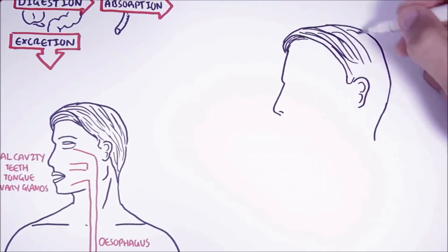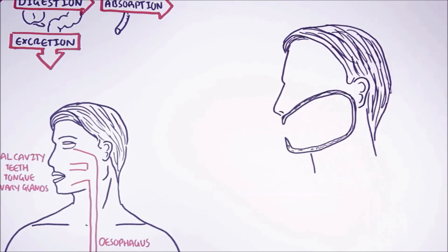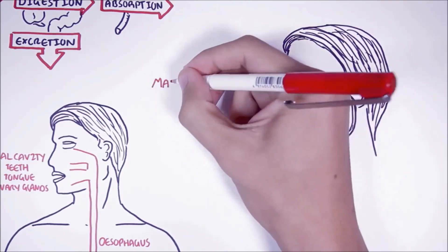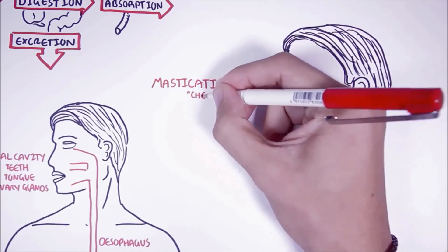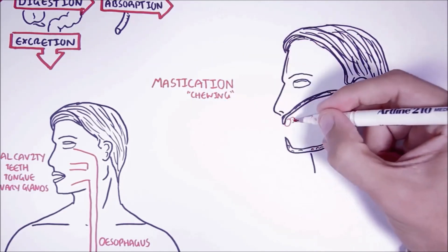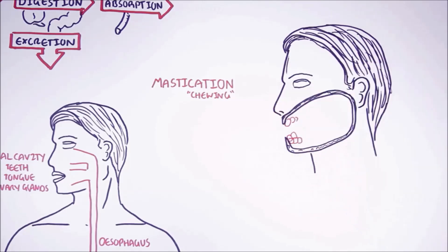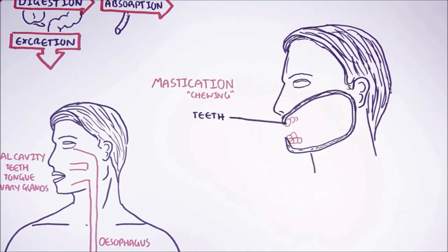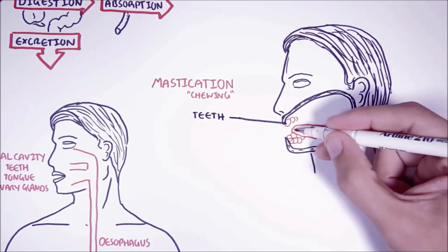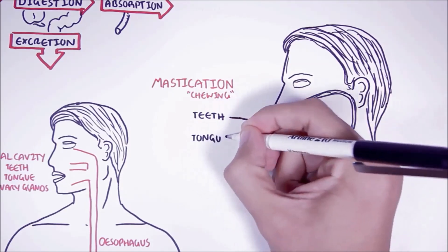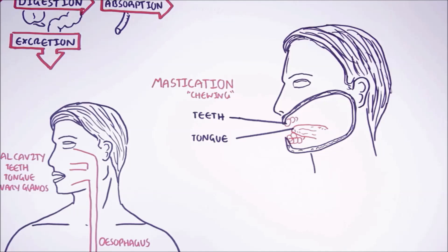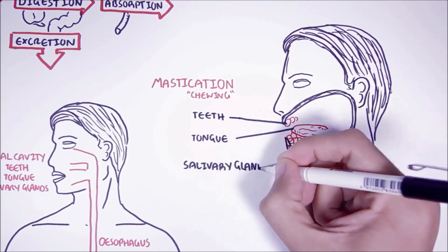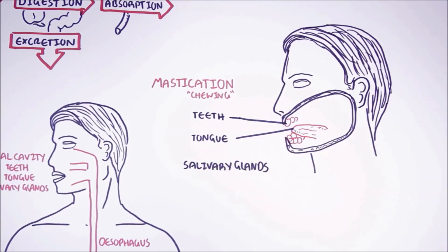Food enters the oral cavity. The process called mastication occurs, which is essentially chewing. Food will be broken down mechanically by the mouth, teeth playing a key role. The tongue plays a role in tasting the food as well as mixing it around, while the salivary glands within the oral cavity secrete saliva which lubricates the food.